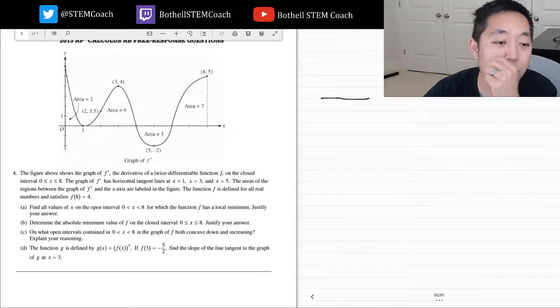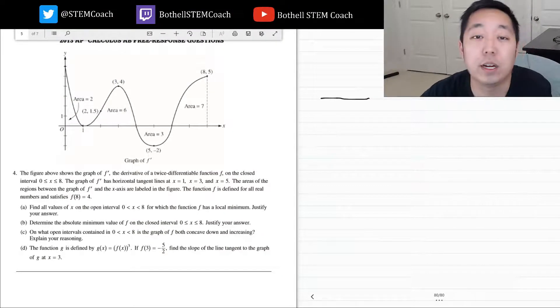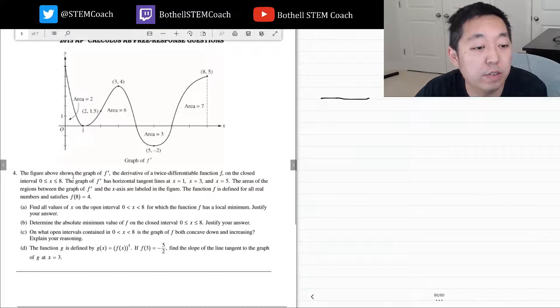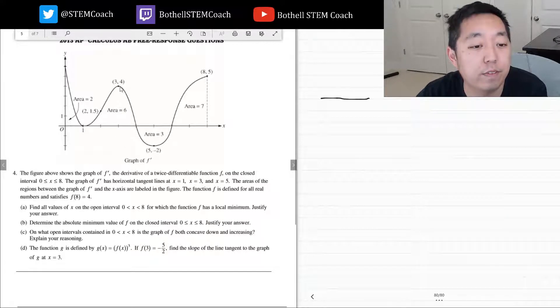Hey guys, this is Alan with Bothell STEM Coach. Today we're continuing on with the AP Calculus 2013 free response questions. Let's get going. The figure above shows the graph of f prime, the derivative of a twice differentiable function f on the closed interval 0 through 8.